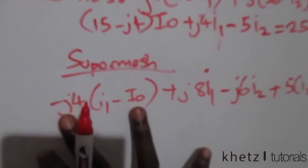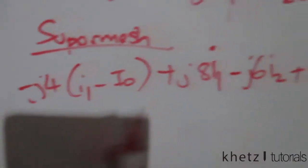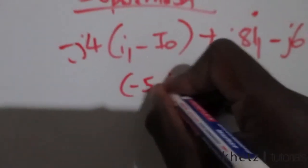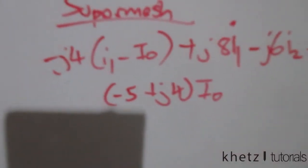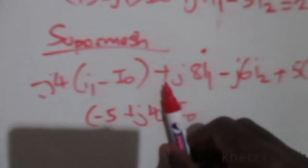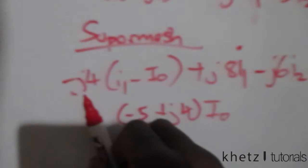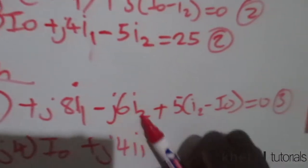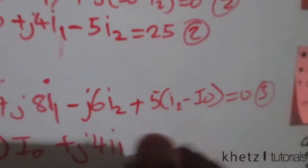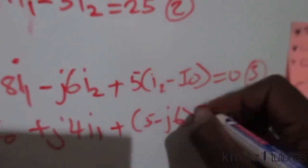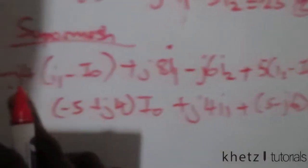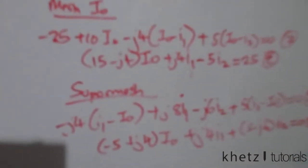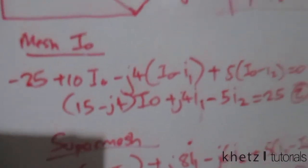For the supermesh equation, grouping IO terms gives (j4 − 5)·IO; grouping I1 terms gives (j8 − j4) = j4·I1; and grouping I2 terms gives (5 − j6)·I2. There are no constant terms, so the right-hand side is zero. This is our third and final equation.